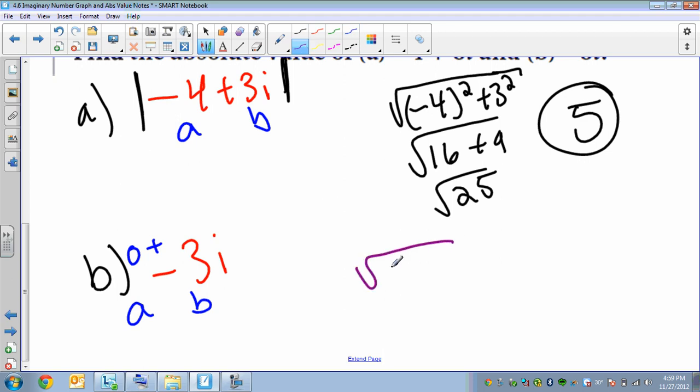So we just fill in our stuff, a squared plus b squared, the square root. So that's like 0 plus 9. The square root of 9 is 3. So that would be our answer for the second one.